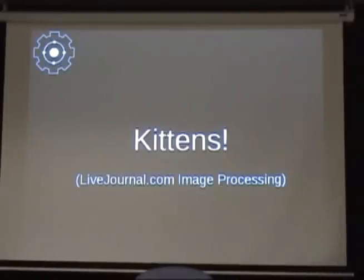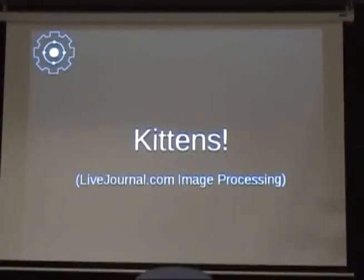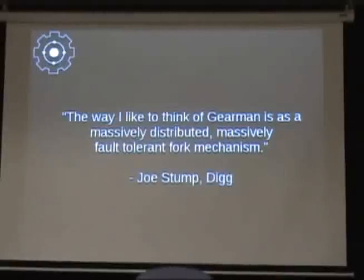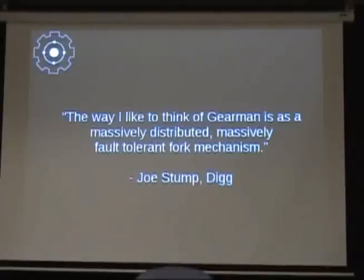This was getting pretty expensive for them. They needed a way to take that work and push it elsewhere, so they could have their frontline servers do what they do best and have a little farm of kitten image conversion machines — specialized hardware with really fast CPUs, not too much memory, because all your CPUs are busy converting kittens.